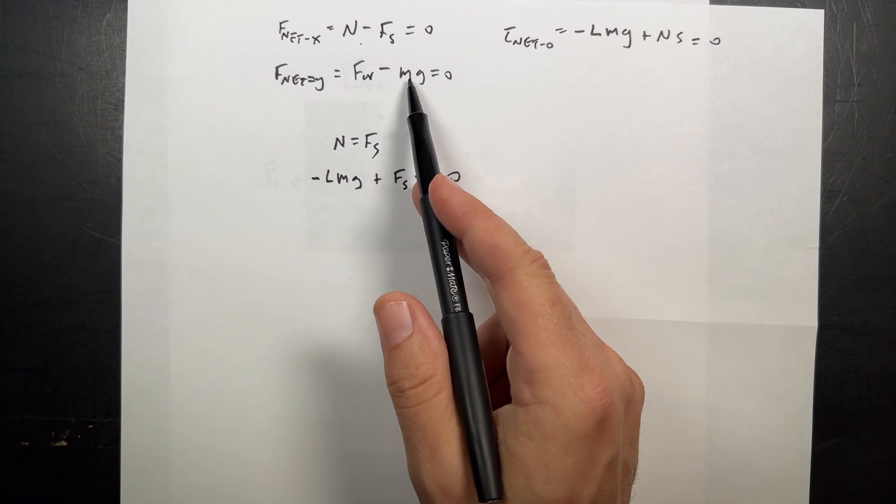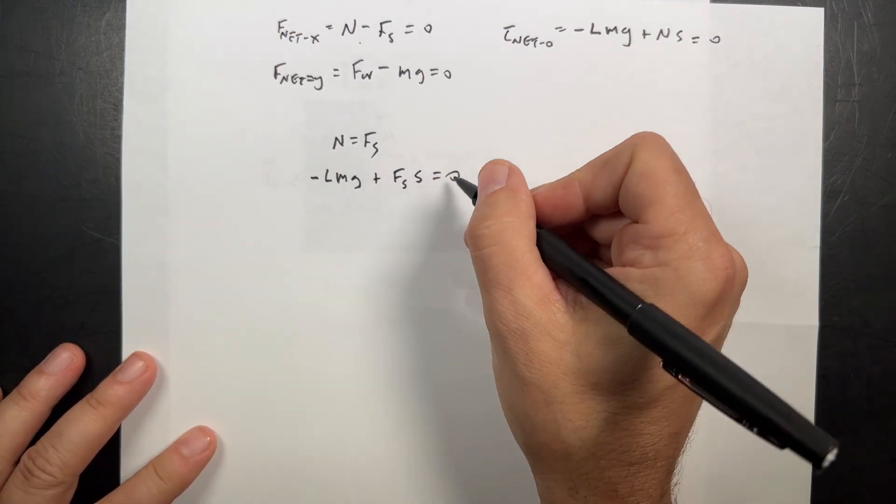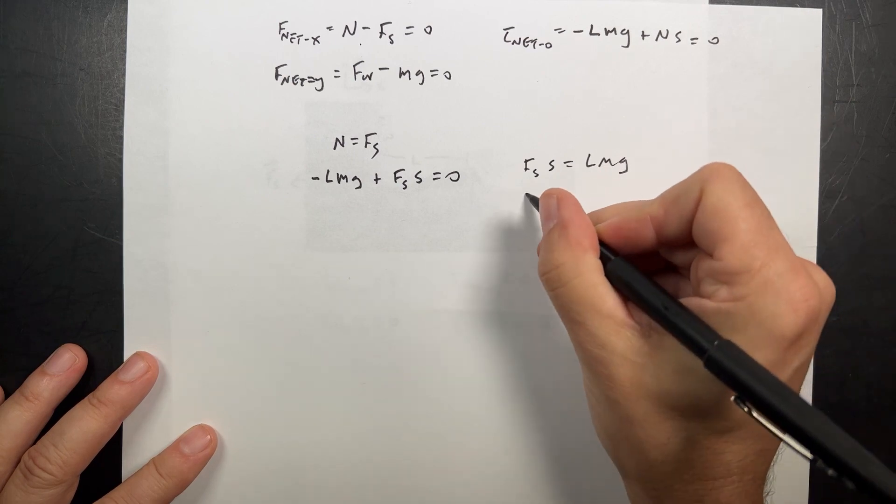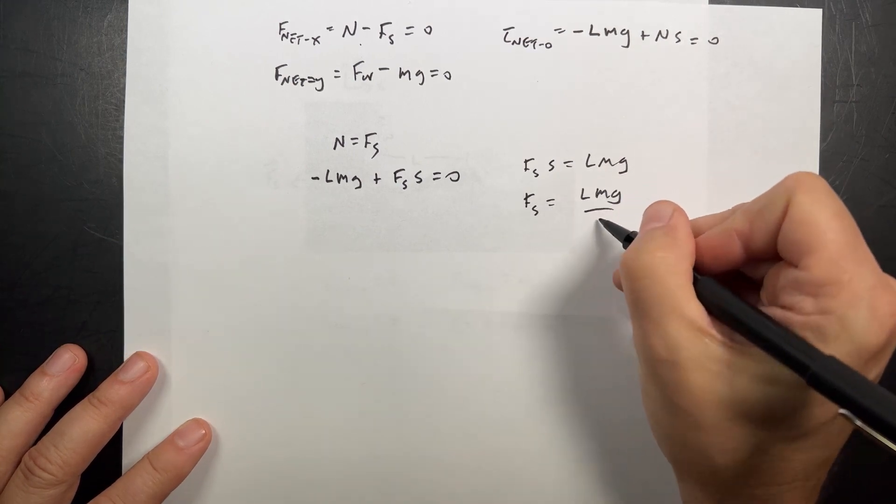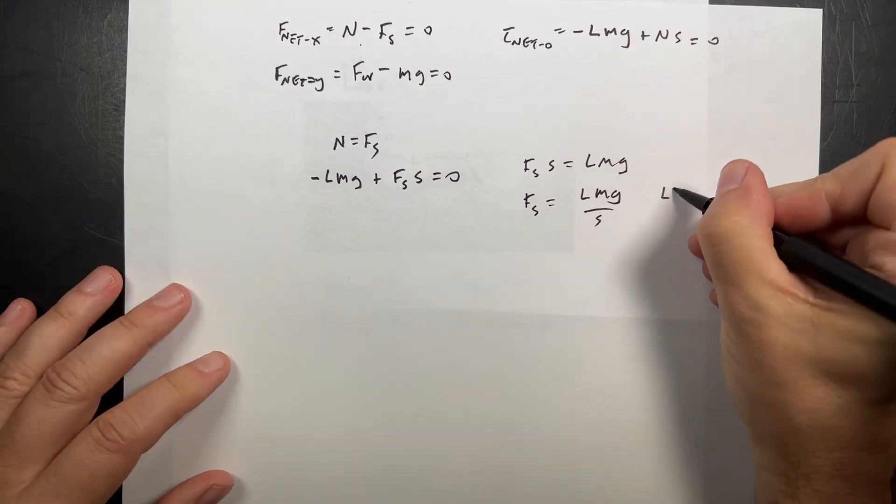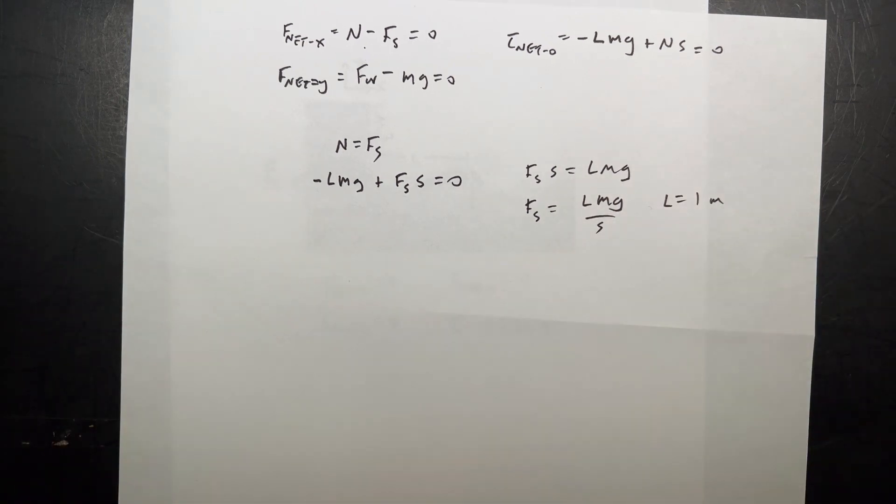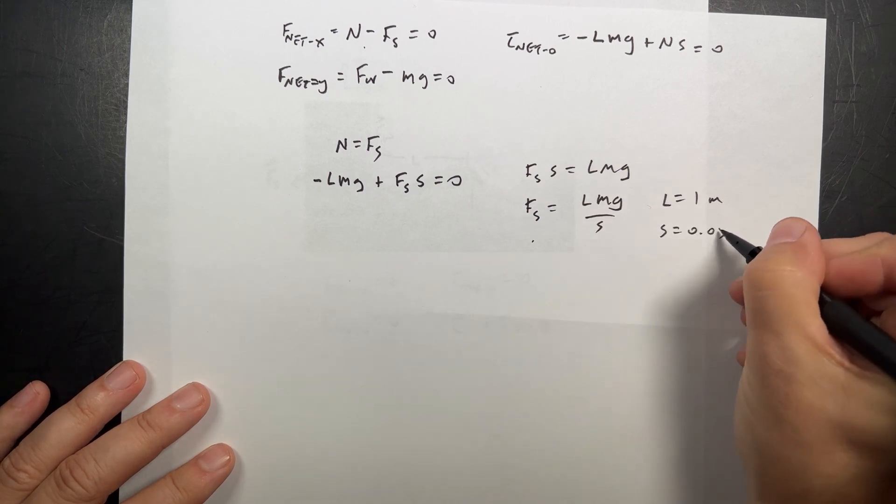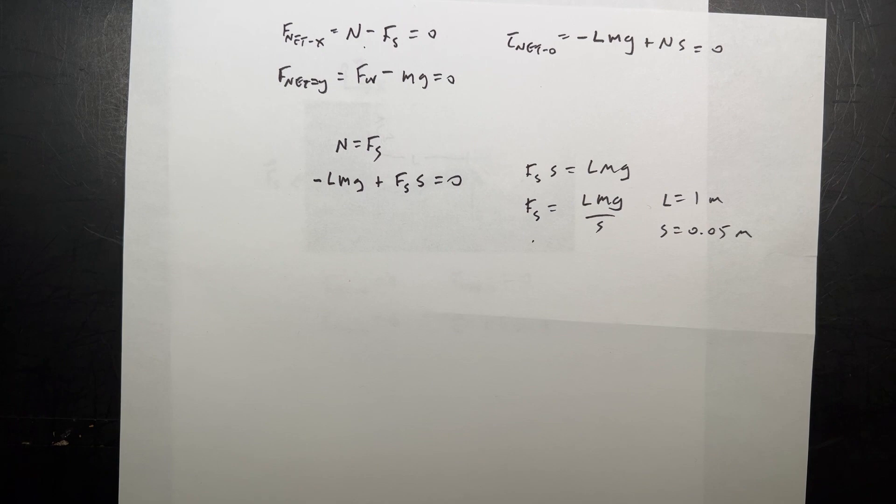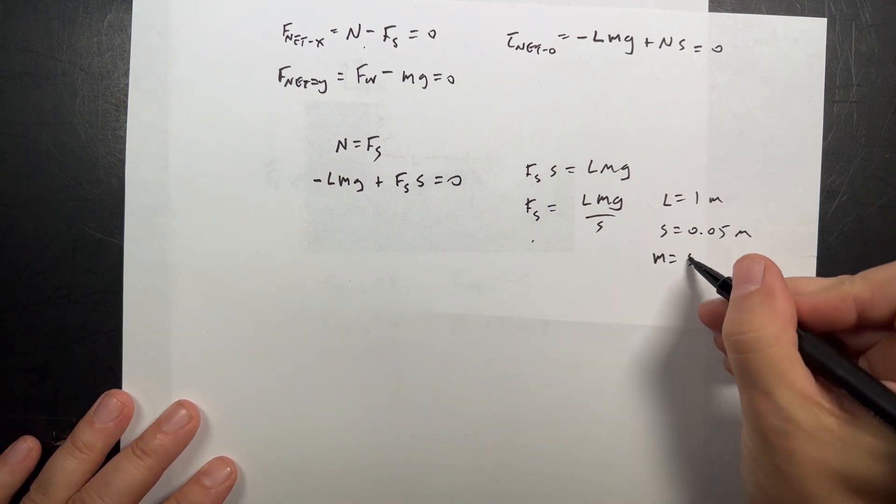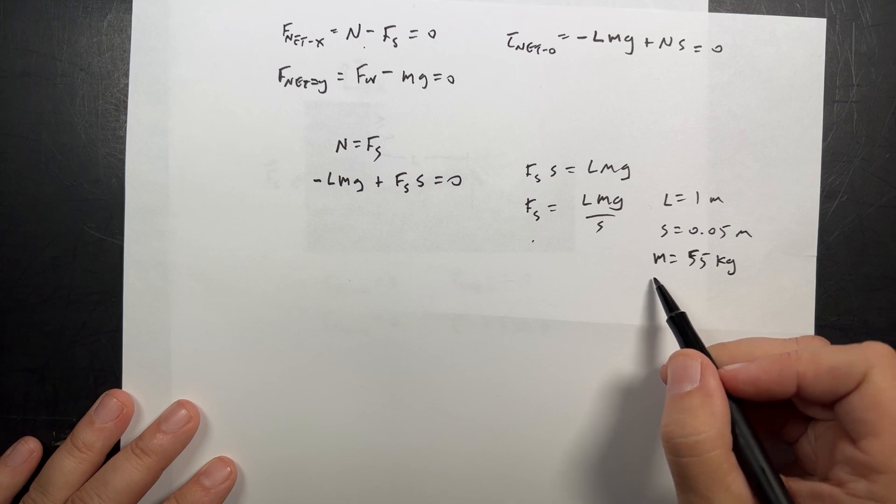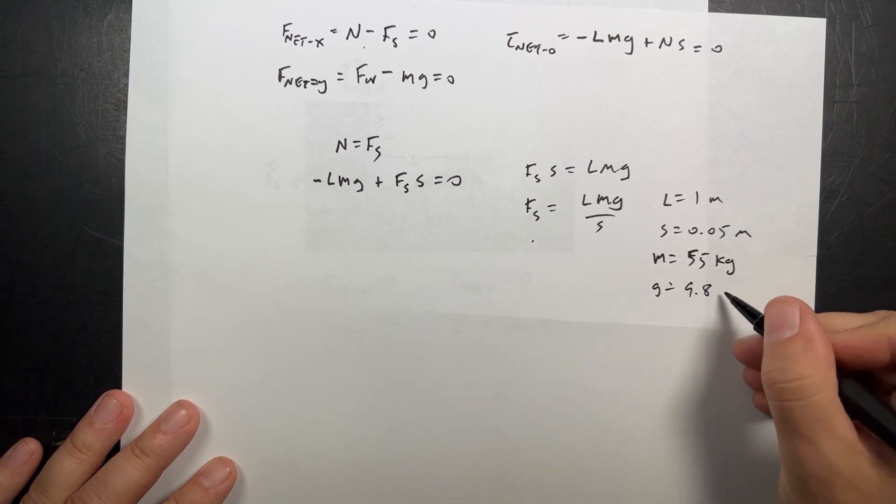So the spider force is going to be F_s = Lmg/S. Now we need to pick some values. Let's say L equals one meter. What about the distance between the front of her foot and the back of her foot? She's kind of on the ball of her feet, so let's say S is 0.05 meters, or five centimeters. The mass, I'm going to say she has a mass of 55 kilograms. She's just a teenager. And g is 9.8 newtons per kilogram.